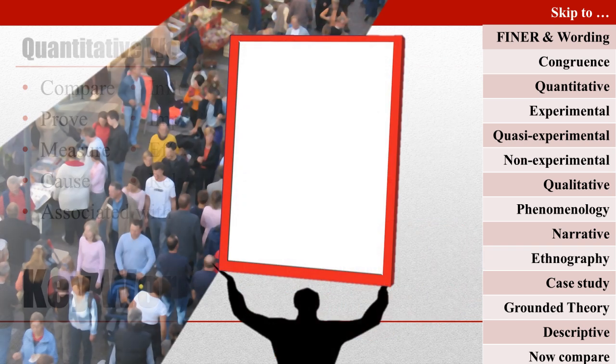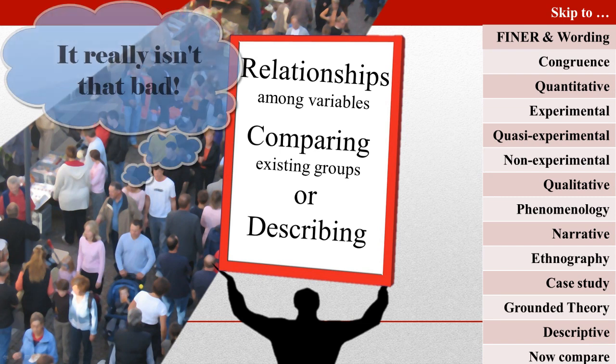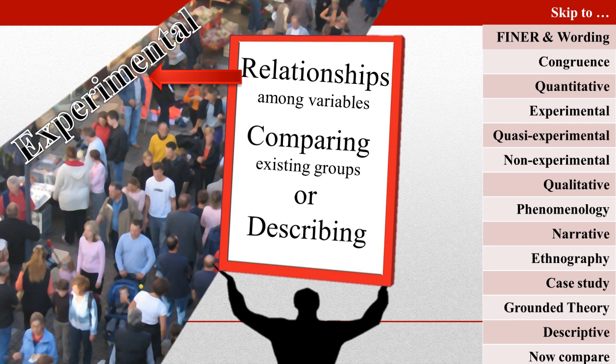Quantitative research is either experimental or non-experimental. The choice of a design depends on several factors including the question, nature of the variable, and ethical as well as pragmatic considerations. Ask yourself if your study is trying to show an association or a causal relationship between variables. If so, it is a relationship-based question that is best answered by an experimental design.